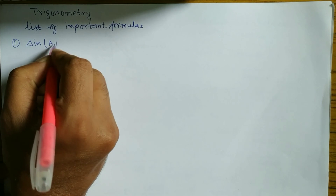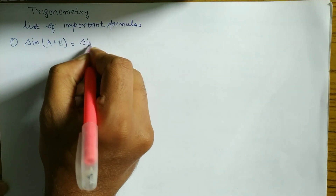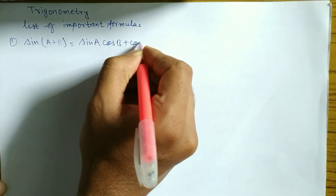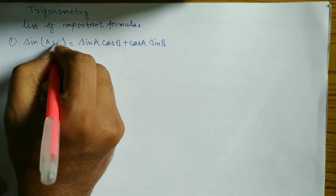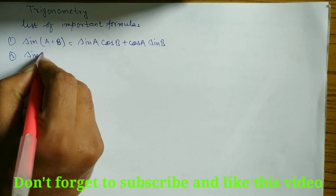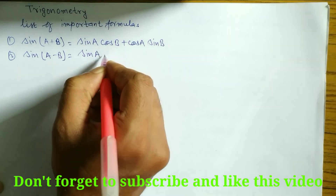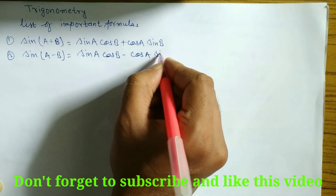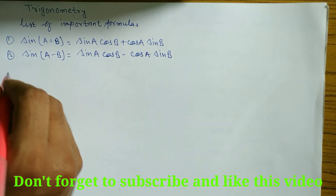Sin(A+B) is equal to sin A cos B plus cos A sin B. Similarly, sin(A−B) is equal to sin A cos B minus cos A sin B. Notice: when there is a plus, then plus; when minus, then minus.